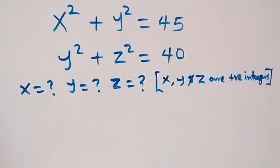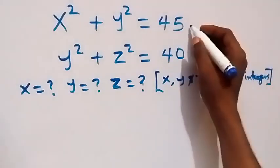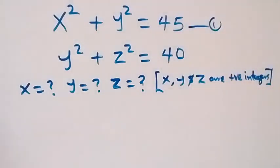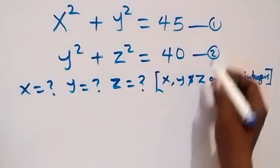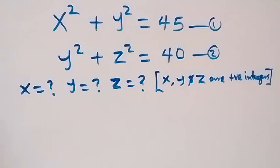Hello, you are welcome to solve this nice system of equations. We have x squared plus y squared equals 45 — let this be equation 1. We have y squared plus z squared equals 40 — this is equation 2. We have to find x, y, and z, where x, y, z are positive integers.